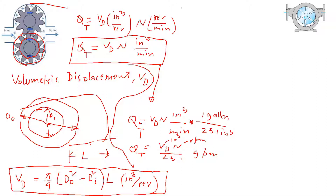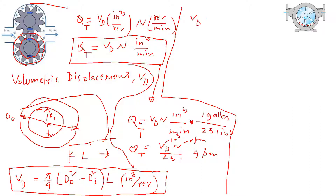If you try to calculate the displacement for this vane pump — the rotor is a solid shaft inside, and the vacuum space is where the fluid is going to be trapped. To calculate the total amount of fluid trapped, ignoring the vane width (which is negligible), the displacement is π/4 times (D_cam² − D_rotor²) times L. On this vane pump, the outside is called the cam and the inside piece is called the rotor.